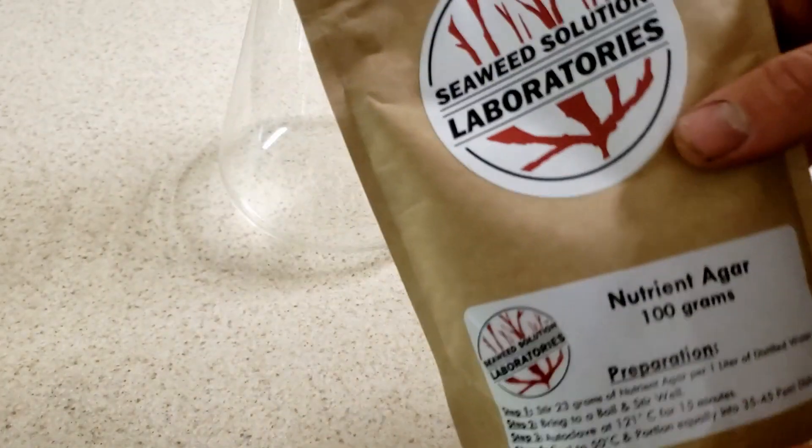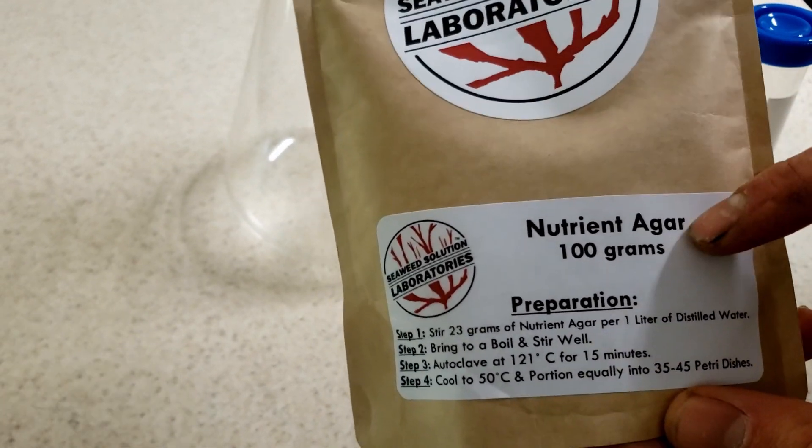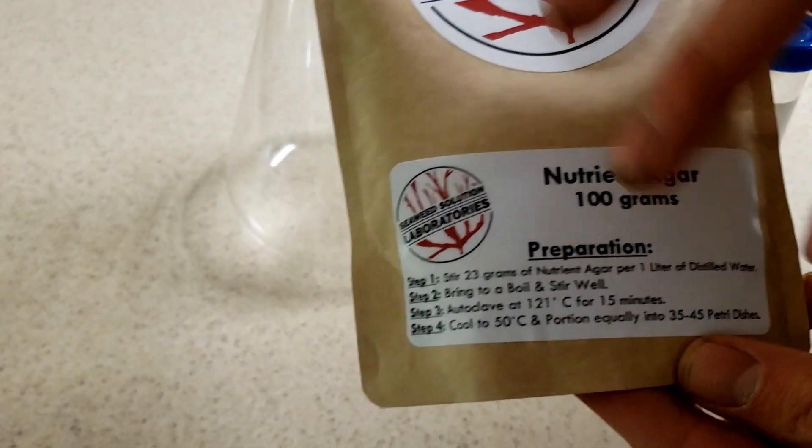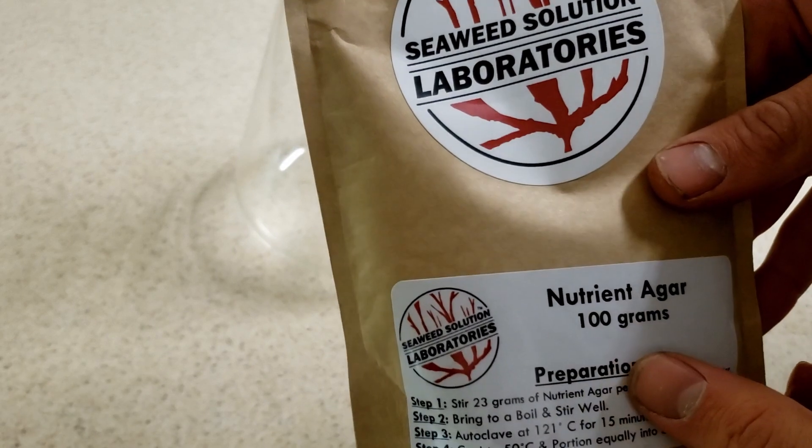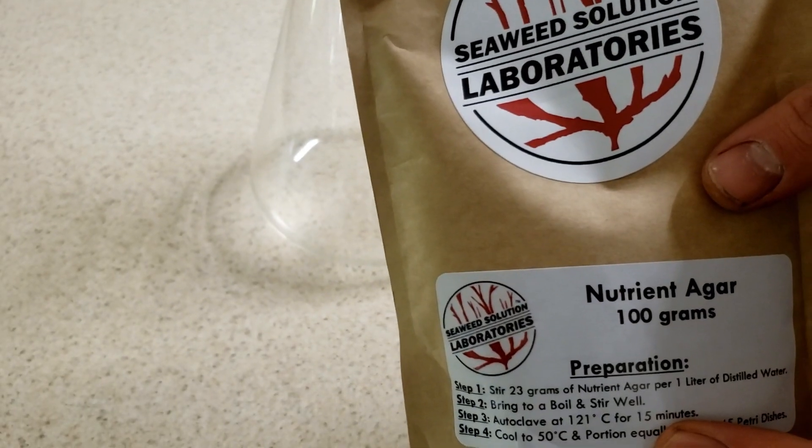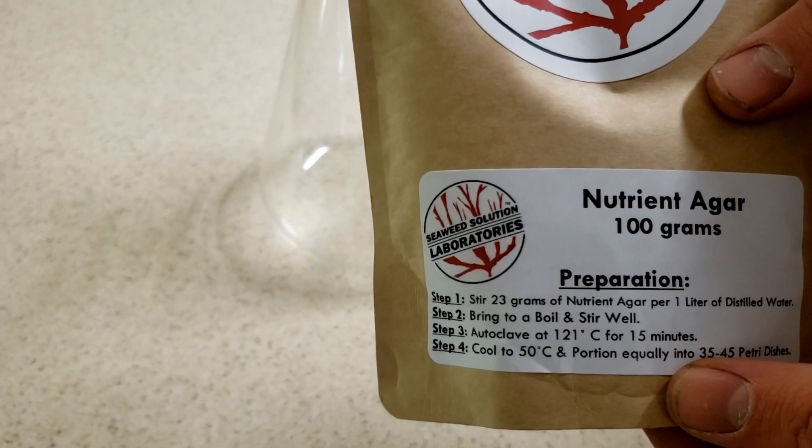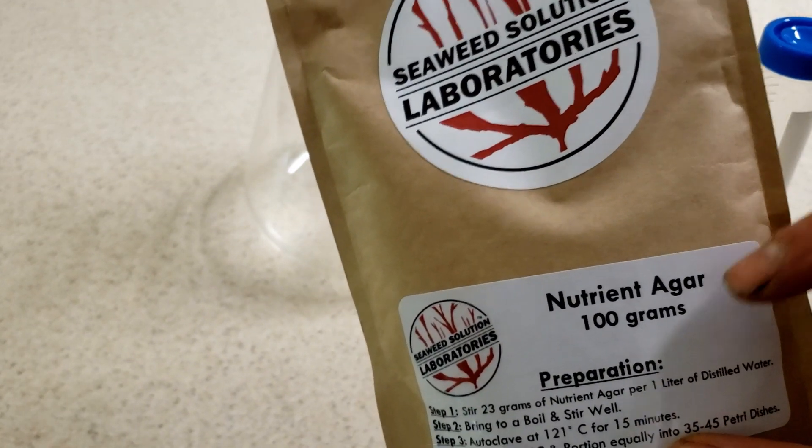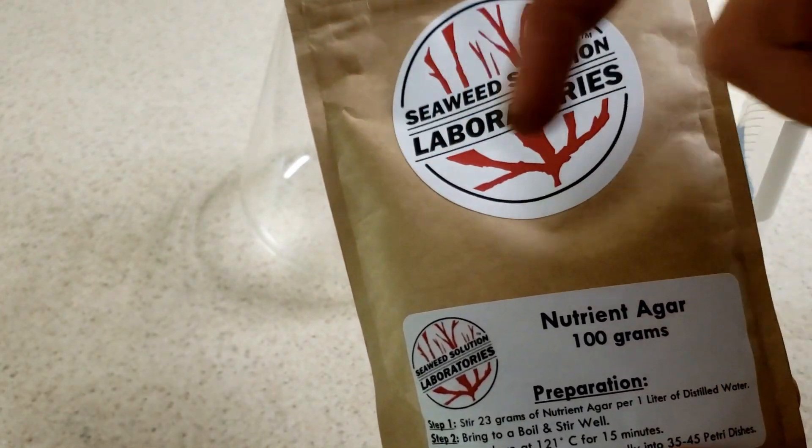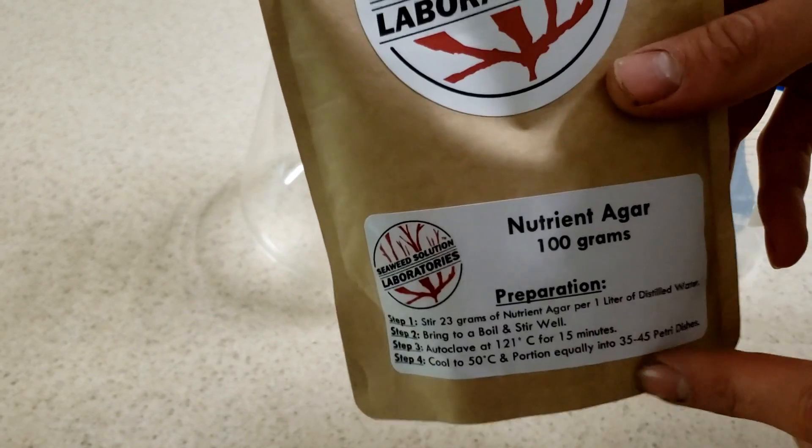The first main ingredient that I'm using is this powdered agar which I got from Jeff Bezos himself, just on Amazon. I think it was only like twenty dollars for 100 grams, makes about four liters which would make 40 plates per liter. So this one bag of agar should make about 200 standard petri dishes, which is really good. You can actually stretch it probably even further than that if you really want to.